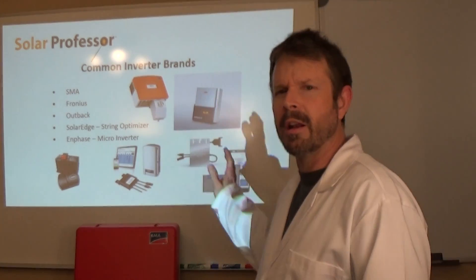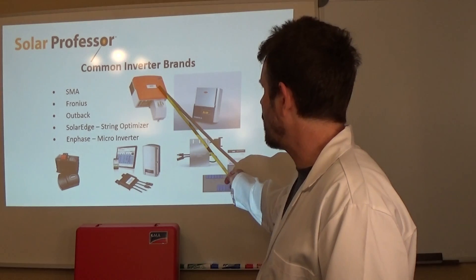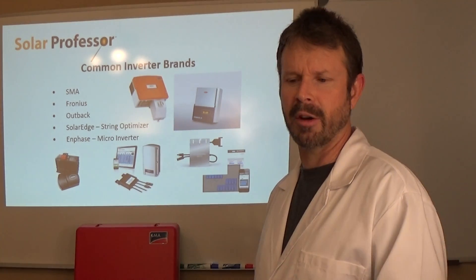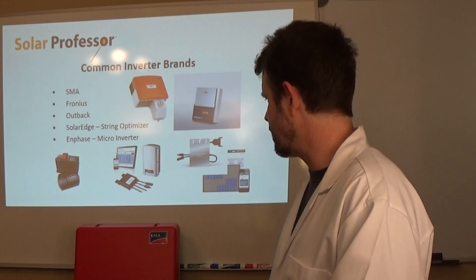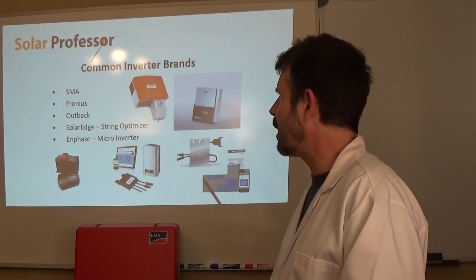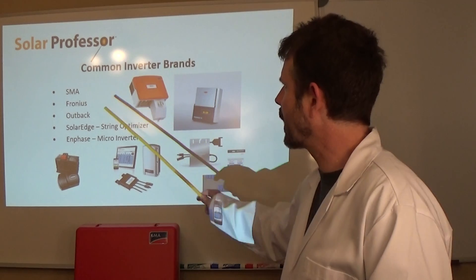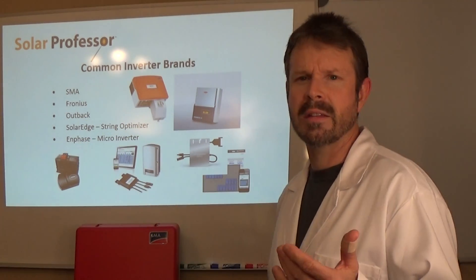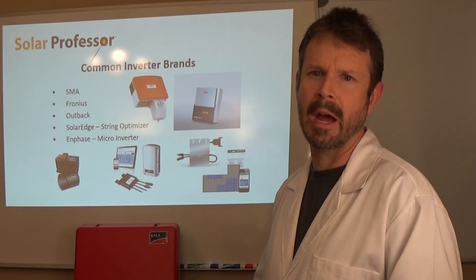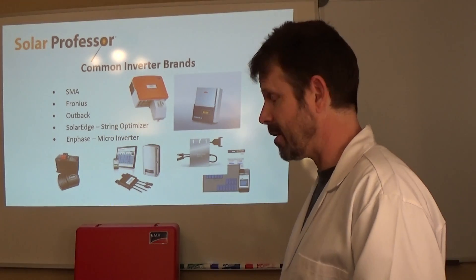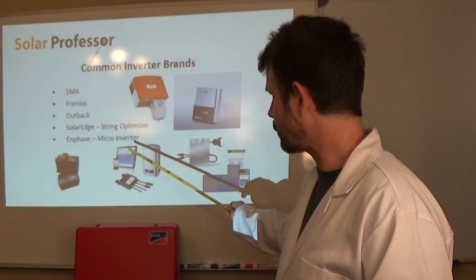Let's cover a few common brands. We have SMA, oftentimes it's a red color, sometimes gray. They have different colors for different applications. I actually have an SMA inverter right here sitting here. Fronius, another popular brand used in the industry, these are string inverters. Outback, that's this black one right here, Outback is an off-grid inverter, popular brand although other manufacturers like SMA have off-grid type application products as well. SolarEdge, it's a string optimizer.